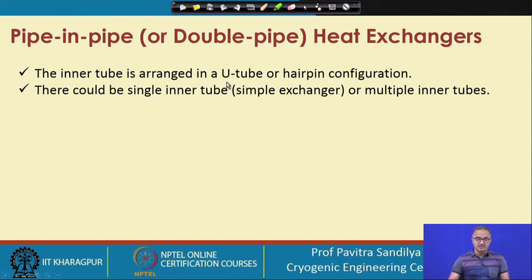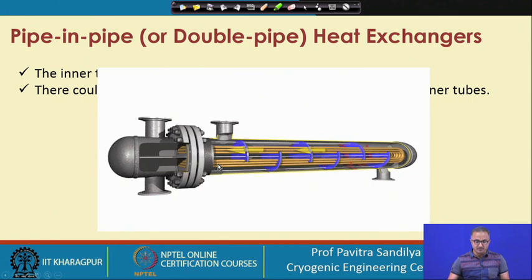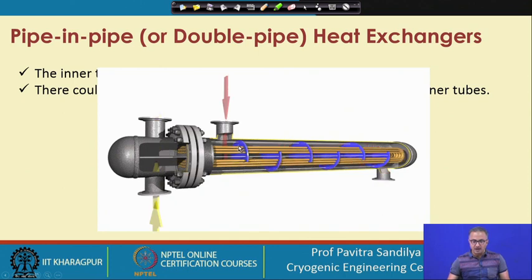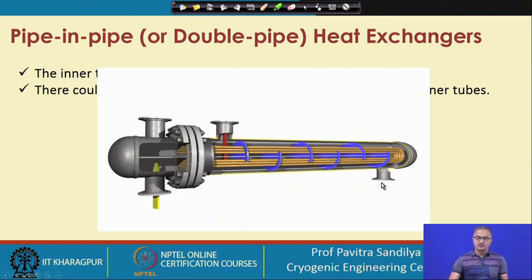The inner tube is arranged in a U-tube or hairpin configuration, and there can be a single inner tube — a simple heat exchanger — or multiple inner tubes. With multiple inner tubes, several inner tubes are placed, all taking this U-turn. One fluid flows through the inner tubes while the other flows through the outer tube. There are two exits for the two fluids.